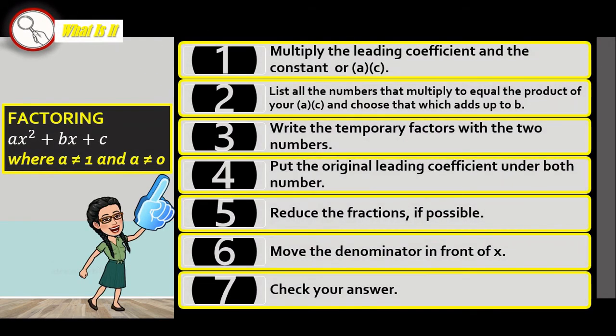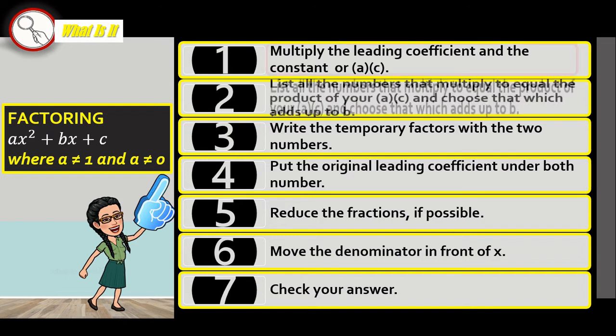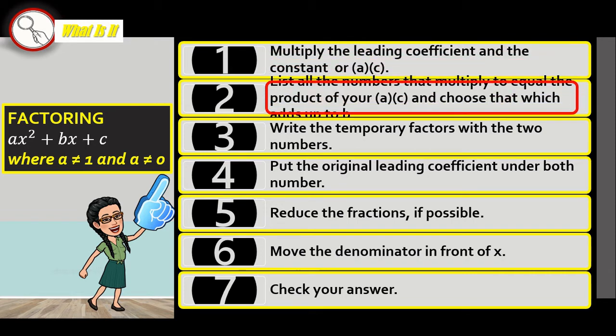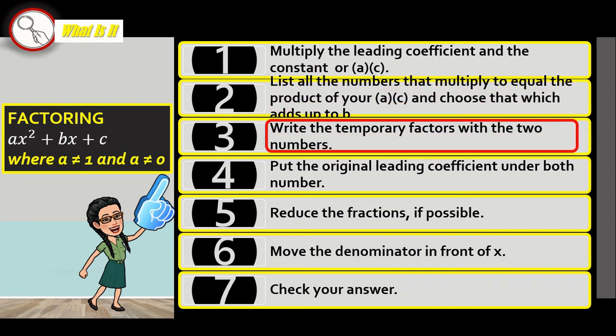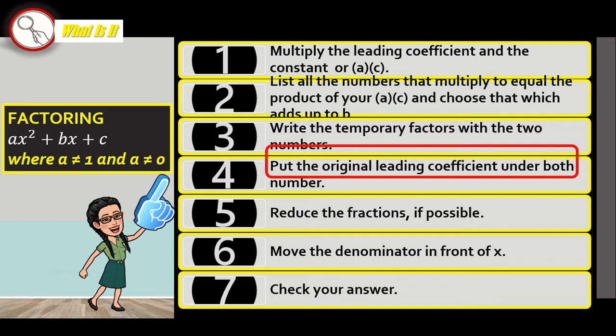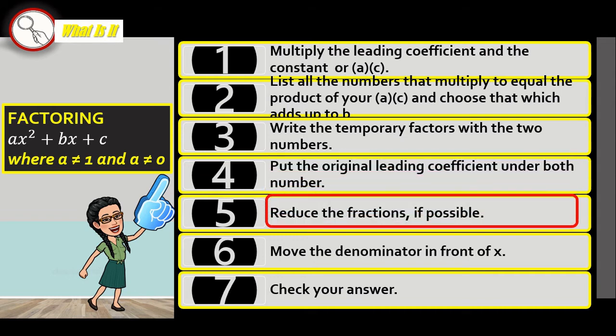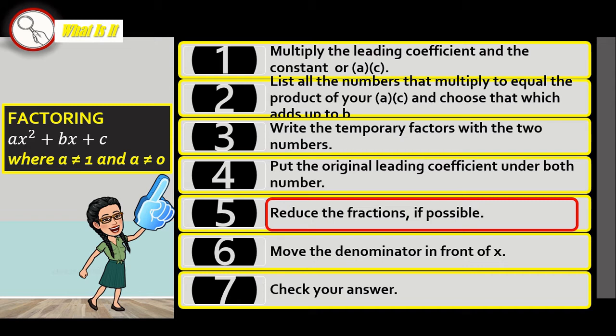Here are the steps. Step 1: Multiply the leading coefficient and the constant or A times C. Step 2: List all the numbers that multiply to equal the product of your AC and choose that which adds to B. Step 3: Write the temporary factors with the two numbers. Step 4: Put the original leading coefficient under both numbers. Step 5: Reduce the fractions if possible.